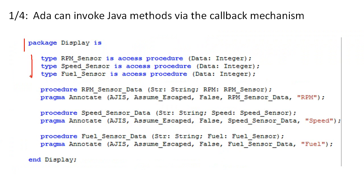Each class will contain an abstract method called type_name_body with a data parameter of type int. The Java developer must extend each abstract class and implement the method. The actual parameter data of type integer is supplied by the ADA program by calling a function that reads a measurement sensor of some kind.